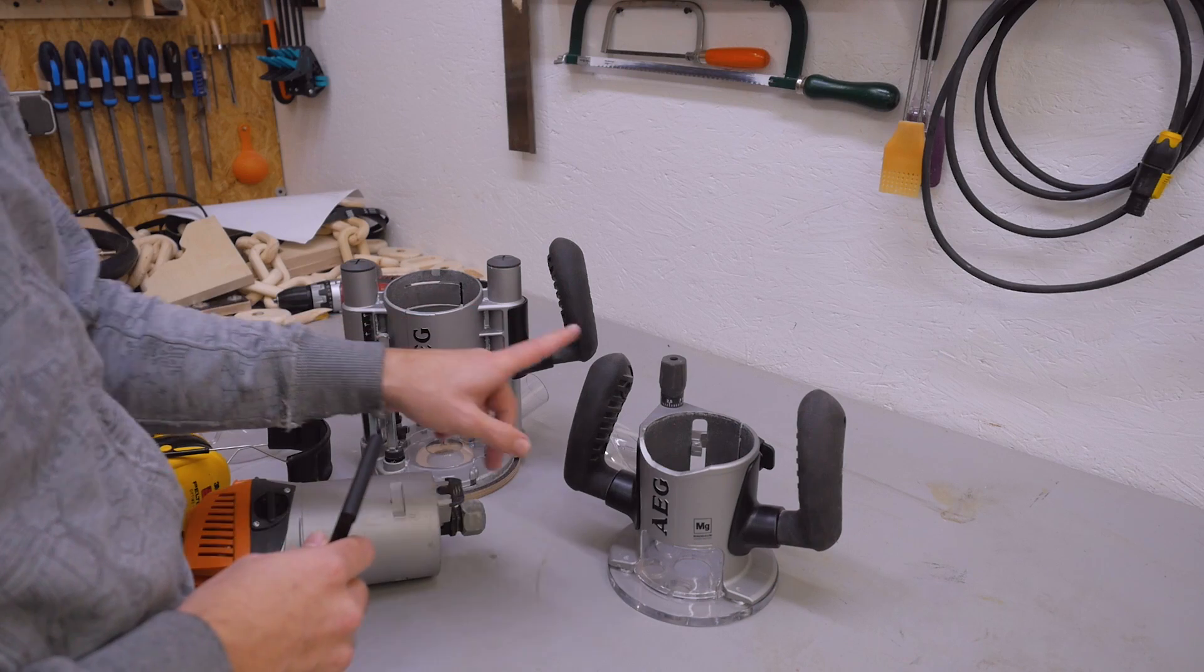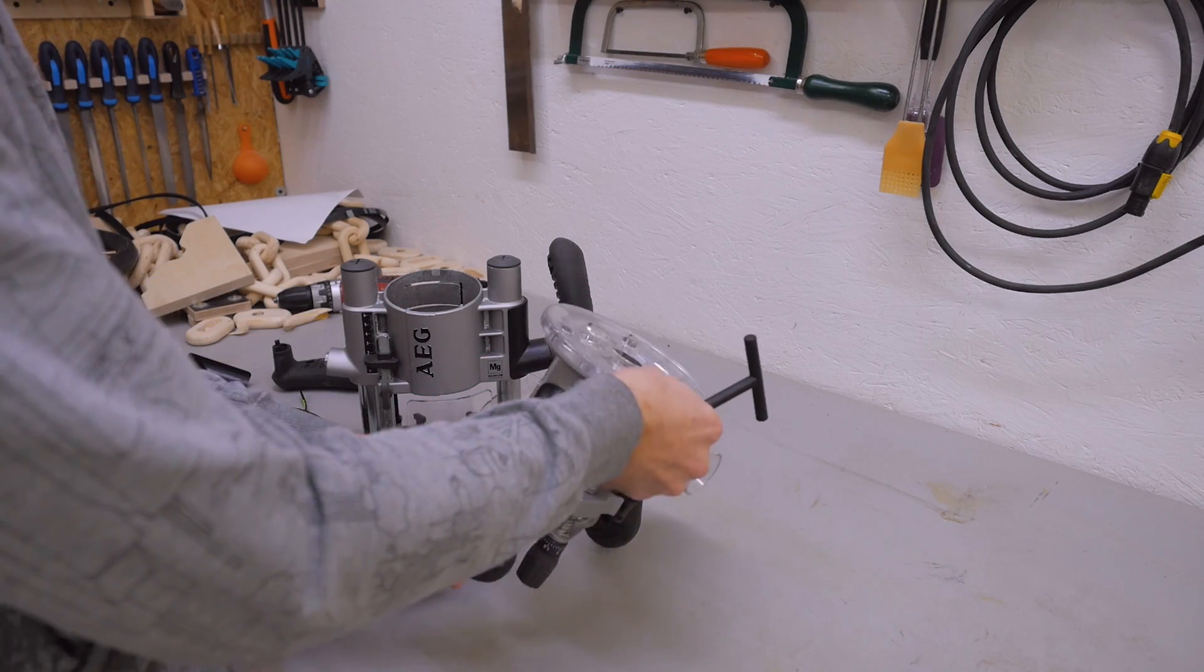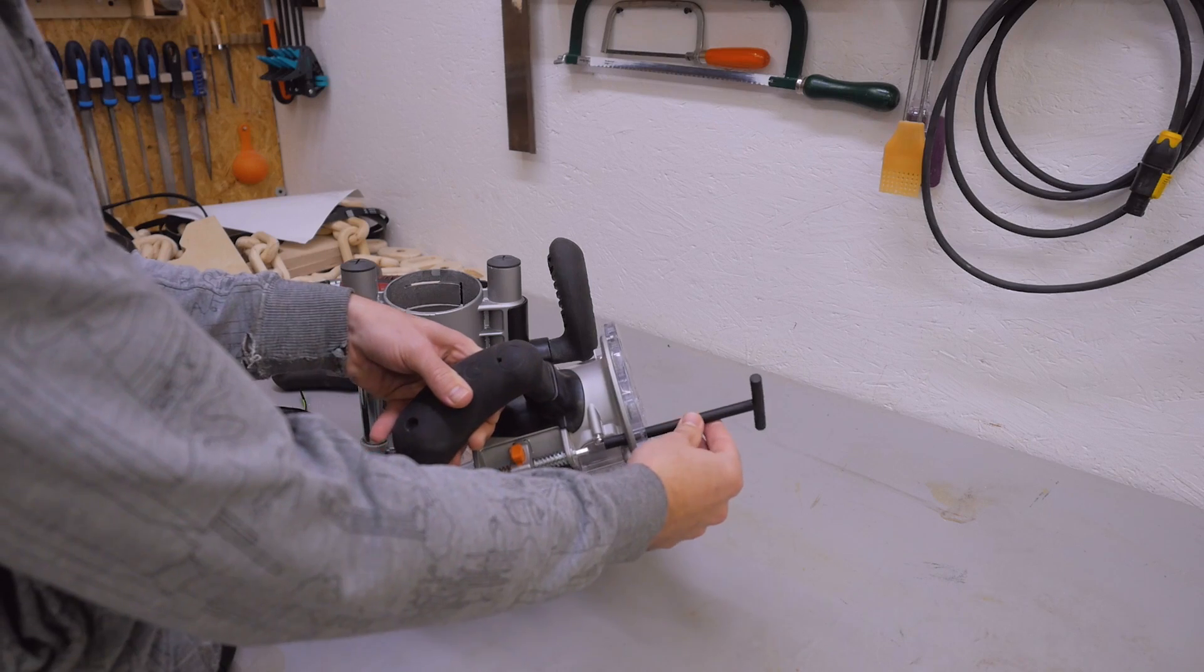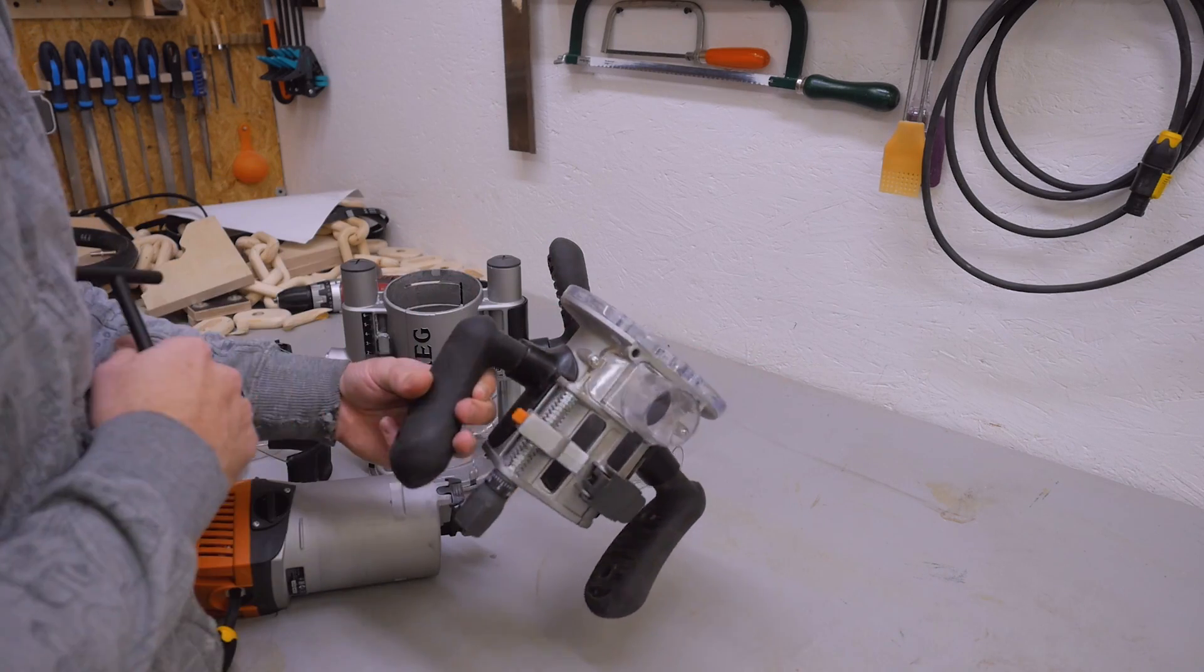It came with the plunge and the fixed base, and the fixed base has this cool feature that it came with a tool which allows you to raise and lower the router through a table. So basically this will be my new router lift.